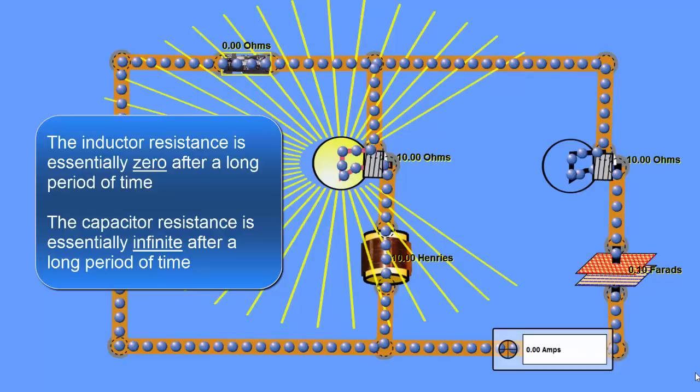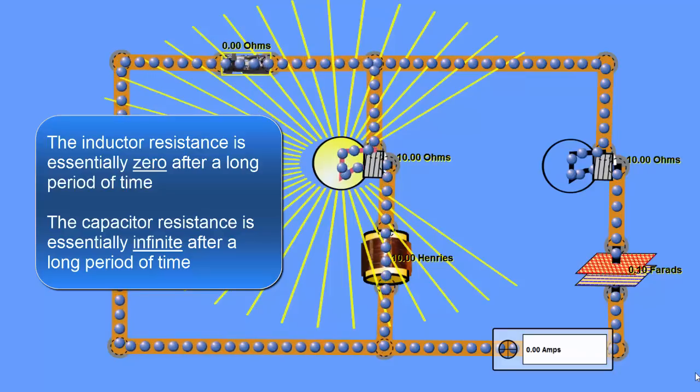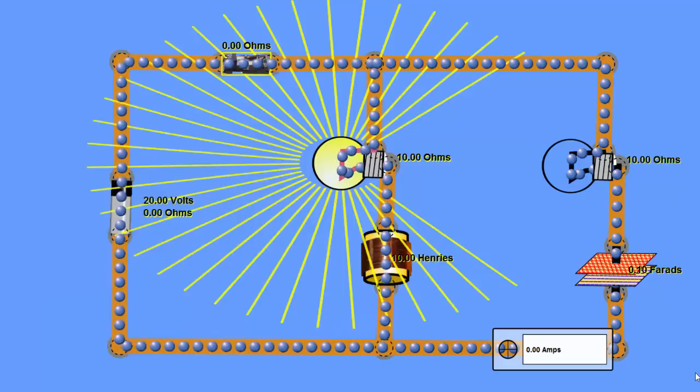So it basically acts like an open circuit after a long period of time. Here we have an open circuit on the capacitor side and for the inductor side we have a short circuit. This is another kind of an opposing view of these two components.